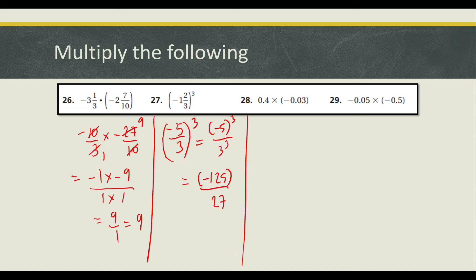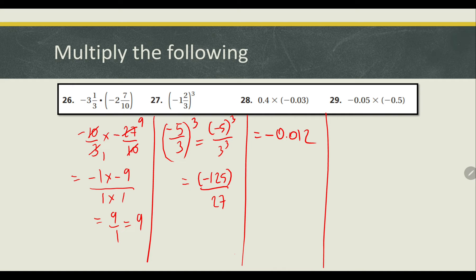So 0.4 times negative 0.03 will give us a negative answer: negative 0.012. You can work this one out mentally.